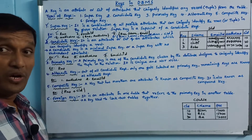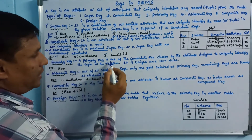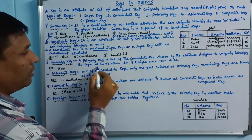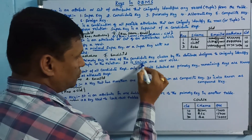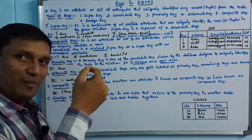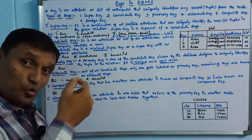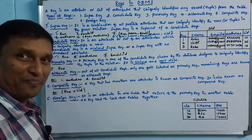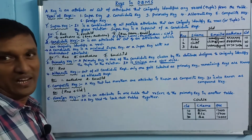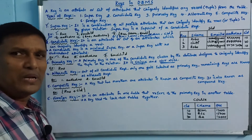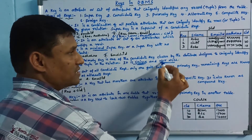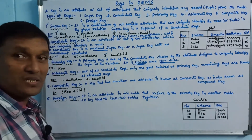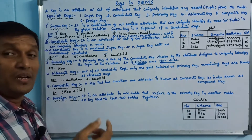Primary key — this is very important. A primary key is one of the candidate keys chosen by the database designer to uniquely identify the tuple in the relation. It is unique and not null. From candidate keys like rule number, Aadhar card, and email ID, one is selected. Not-null means there must be a value; unique means without duplication. The selected column is the primary key.